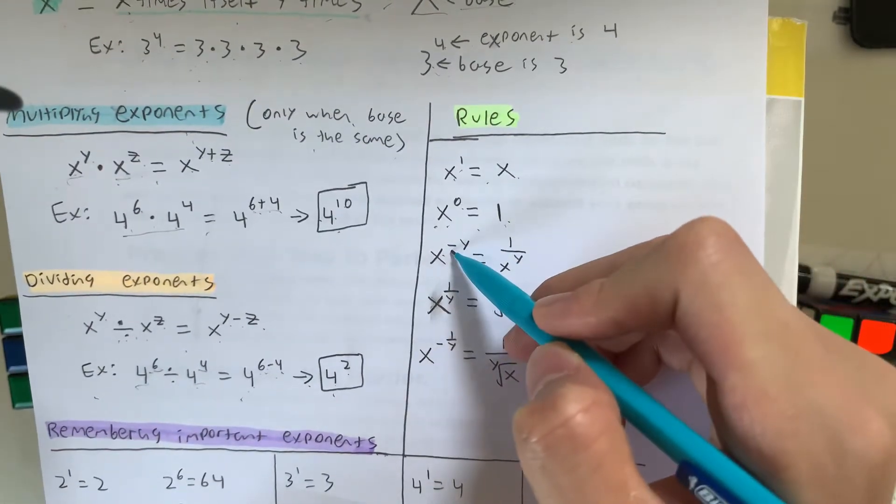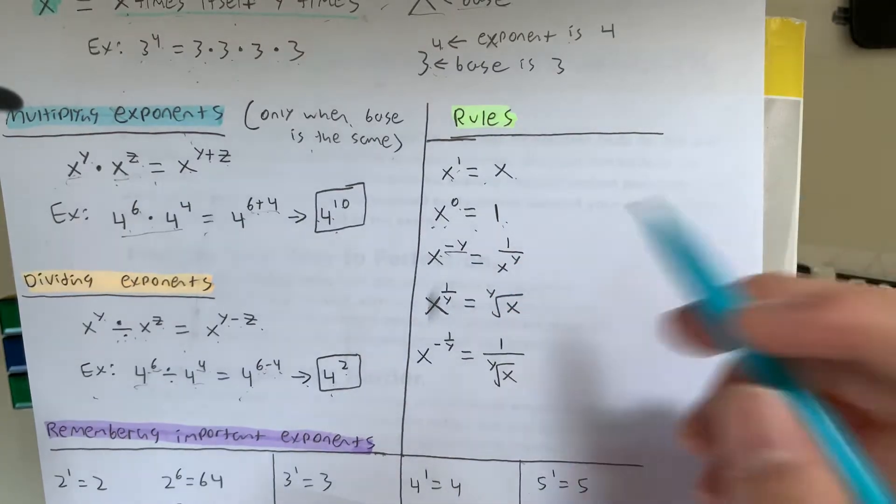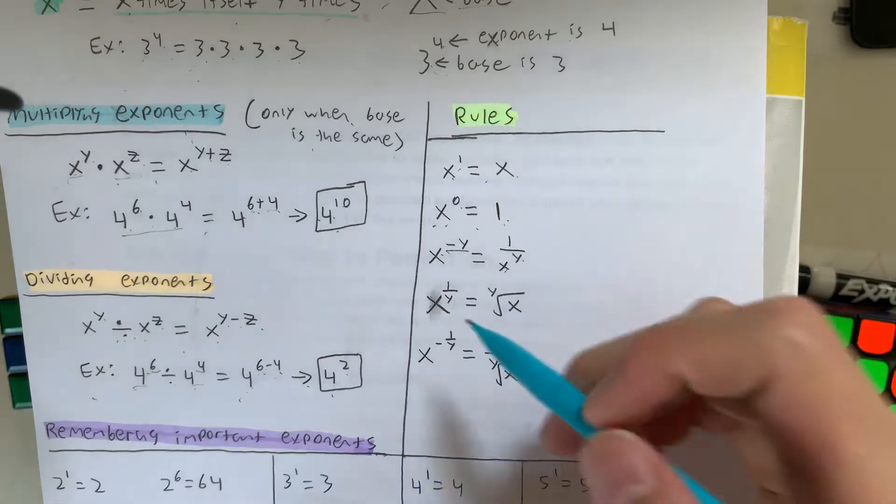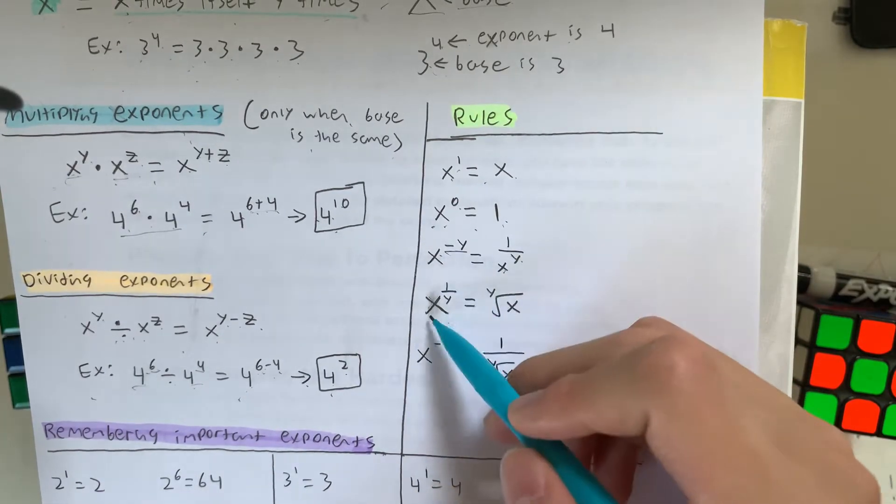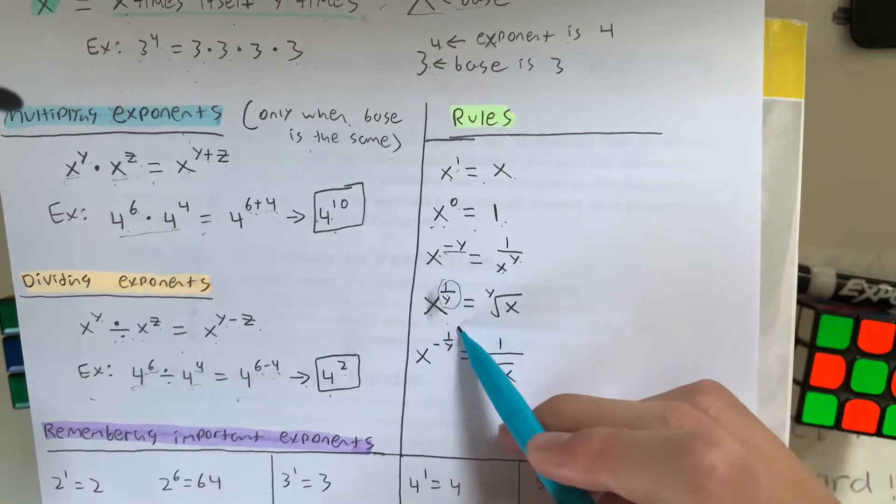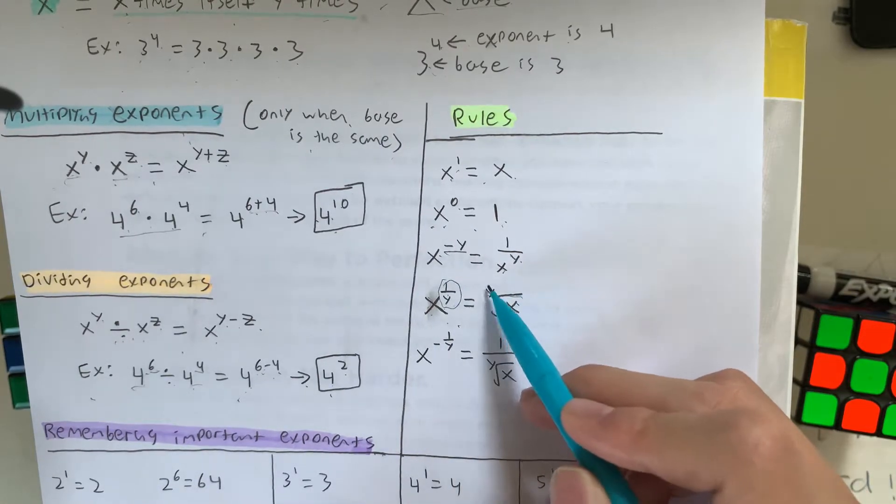And this is pretty special, but x to the negative y, the exponent's a negative number, is equal to 1 over x to the y. And now, another case is x to the 1 over y, this is a fraction right here, is equal to x root y.